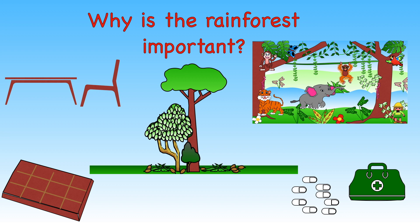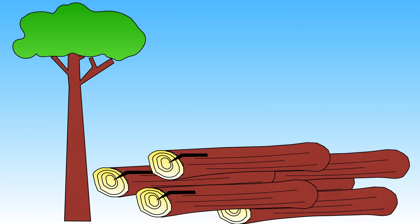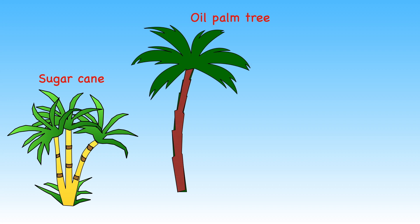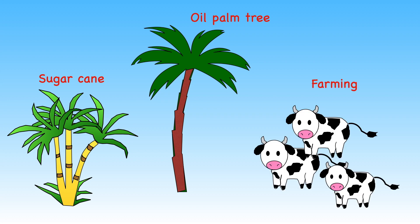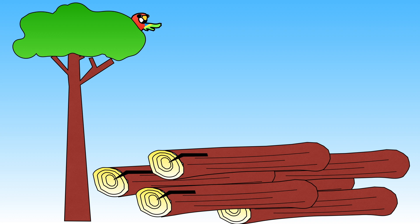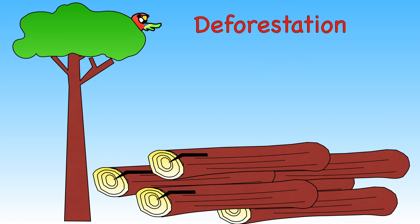Sadly, rainforests from all over the world are under threat. Every second, an area of rainforest the size of a football pitch is cut down. Trees are cut down for their timber, and some rainforests are also being destroyed to make space for farms. Trees are being cut down to grow sugar cane and oil palm trees, and also to make space for grazing animals. Chopping down an area of trees is called deforestation.